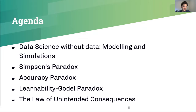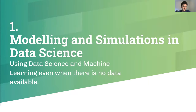Today I'm going to introduce you to a few different paradoxes you can encounter when going through a data science project. The first one is how can you do data science without data, and I'm going to introduce you to modeling simulations, then the Simpson Paradox, the Accuracy Paradox, the ability-goal paradox, and the Law of Unintended Consequences.